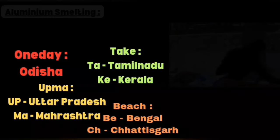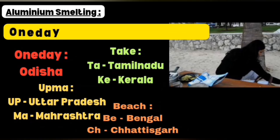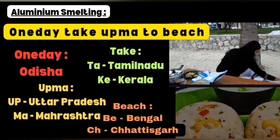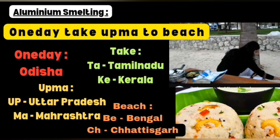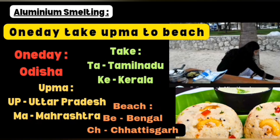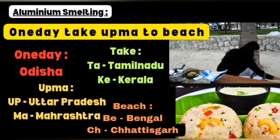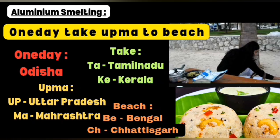The next shortcut is: one day take upma to beach. Using this sentence you can remember all the aluminium plant locations easily. OD refers to Odisha, TA to Tamil Nadu, KE to Kerala, UP to Uttar Pradesh, MA to Maharashtra, BE to Bengal, CA to Chhattisgarh. These are the locations of aluminium plants in our country.